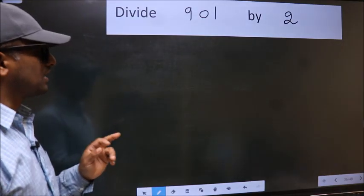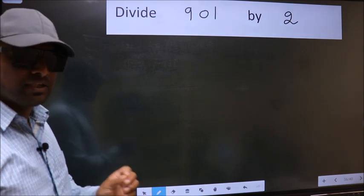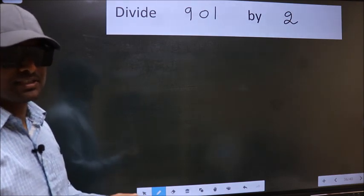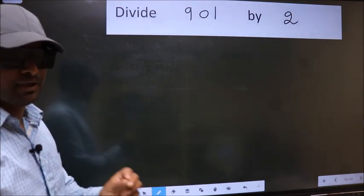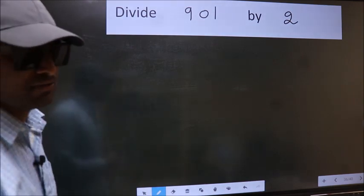Divide 901 by 2. While doing this division, many do this mistake. What is the mistake that they do? I will let you know. But before that, we should frame it in this way.